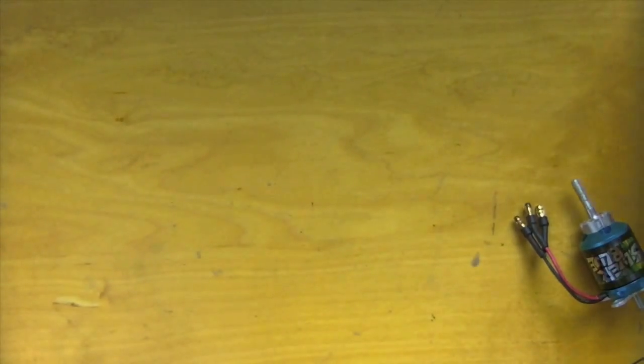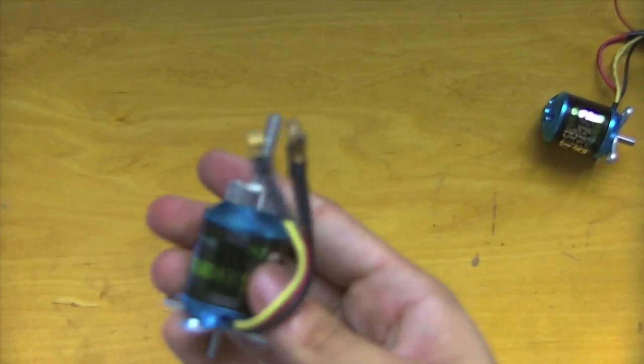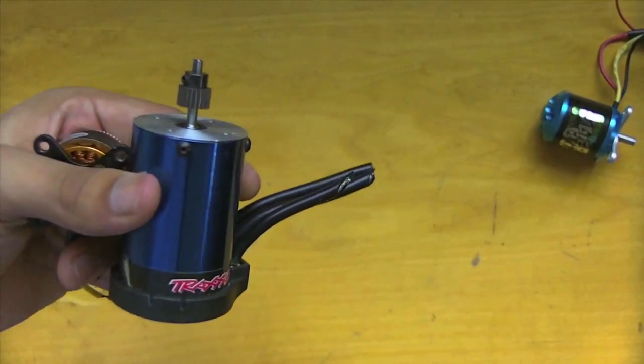For example, this motor, the blue one, has a KV value of only 750, whereas this in-runner has something around 3,000 or 4,000 KV.